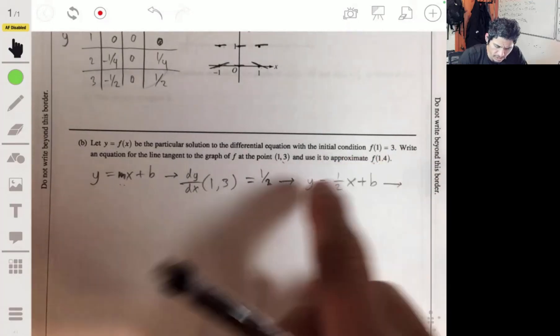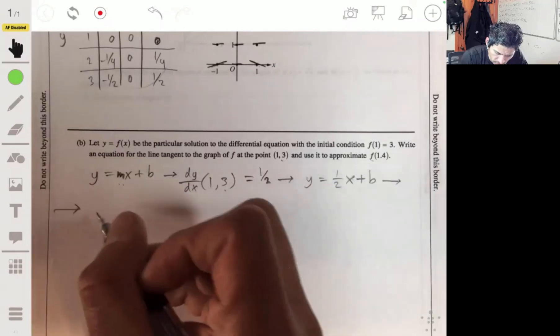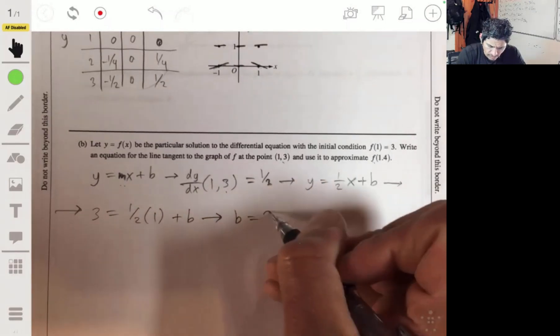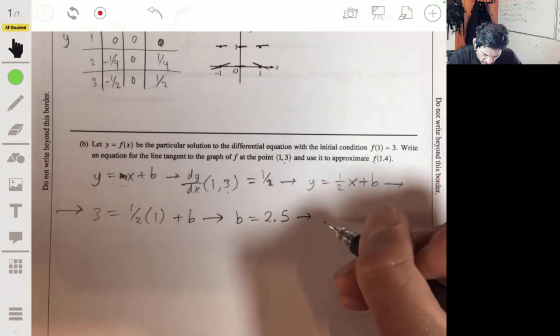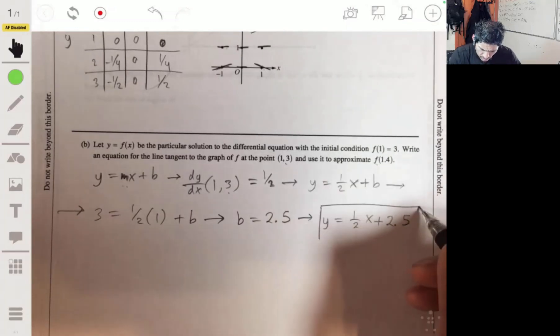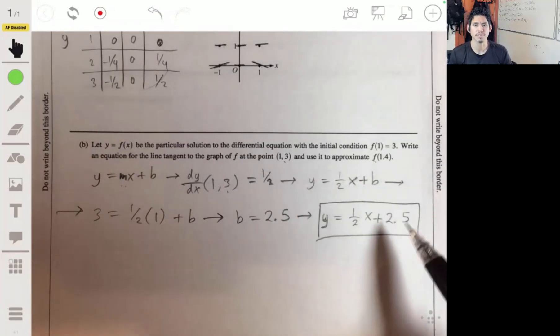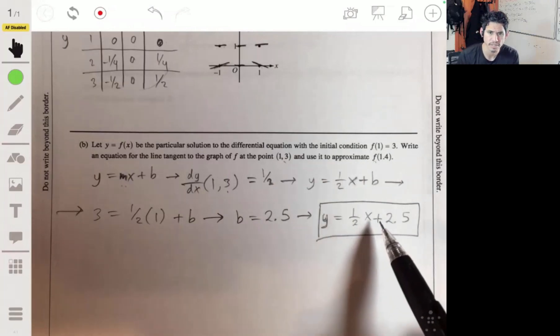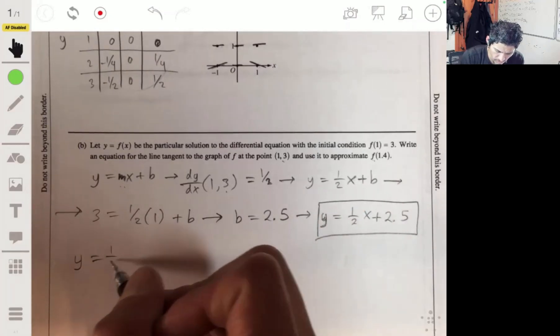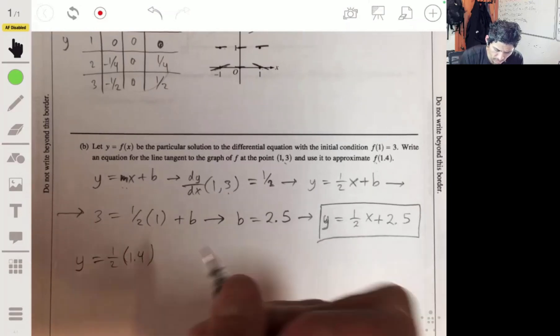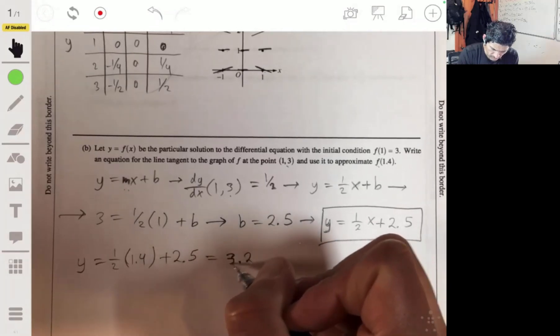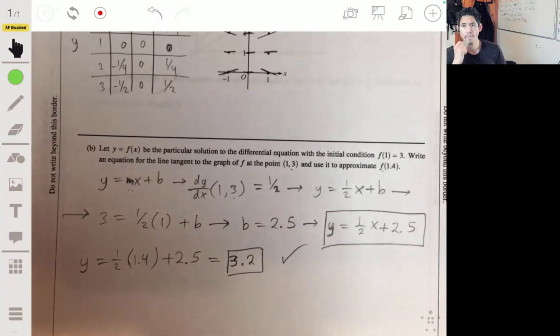Solve for b by plugging in a point, plugging in (1,3). We get 3 equals one half times 1 plus b. The y-intercept is then 2.5, and then our equation for the tangent line is one half x plus 2.5. So using this to approximate it, we just have to plug in 1.4 for x. So then plug in 1.4, we get one half times 1.4 plus 2.5, that'll be 0.7, so 3.2.